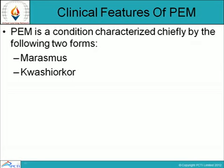PEM is a condition characterized chiefly by two clinical forms: Marasmus and Kwashiorkor. Marasmus is characterized by very low body weight for age, loss of subcutaneous fat, and gross muscle wasting. It is observed more frequently in infants and very young children.